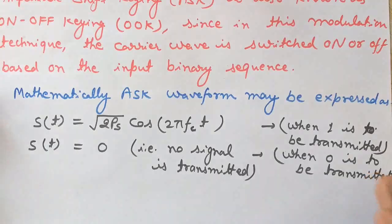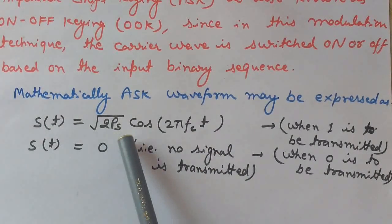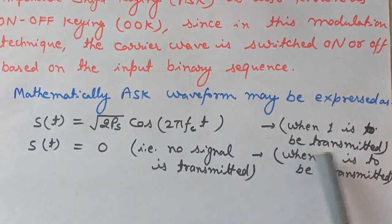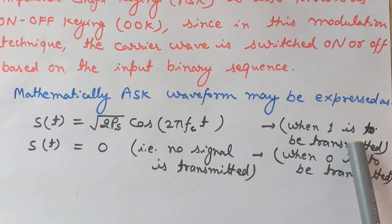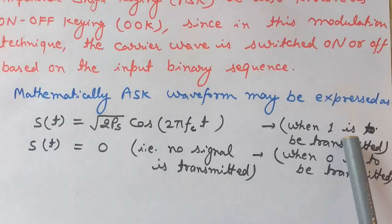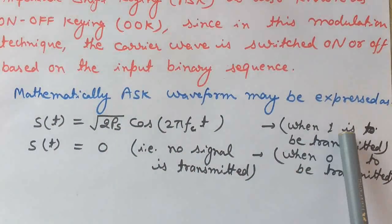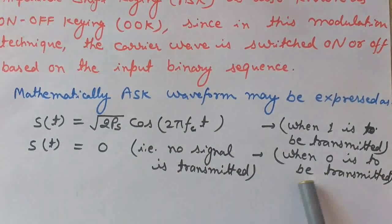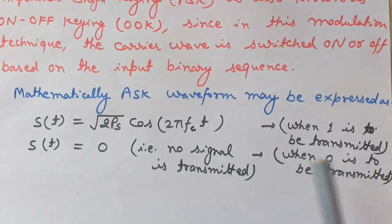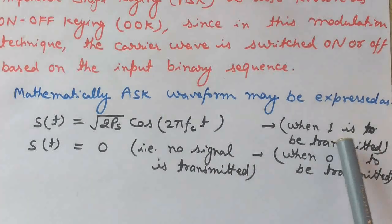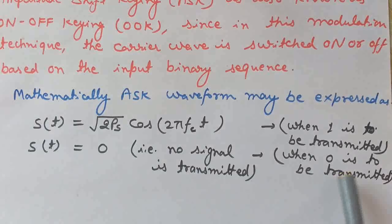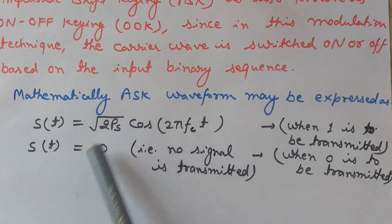We can replace A with √(2P), so the ASK signal can be mathematically represented as: S(t) = √(2P)·cos(2πfct) when 1 is to be transmitted, and S(t) = 0 when 0 is to be transmitted — meaning no signal is transmitted for a binary 0. When 1 is to be transmitted, the carrier wave with amplitude √(2P) is sent. This is the mathematical representation of amplitude shift keying.